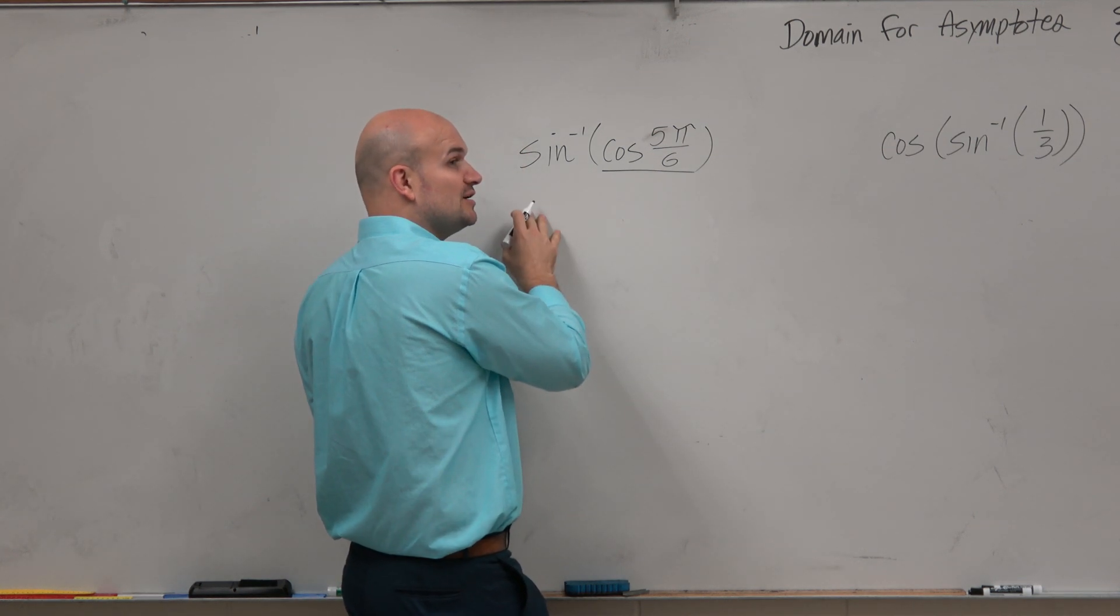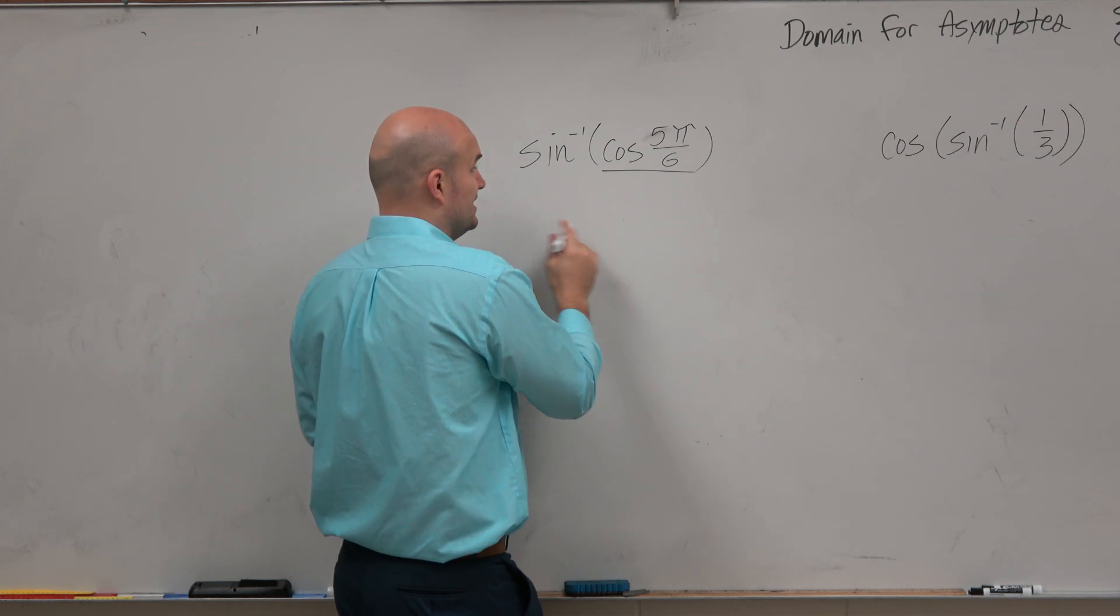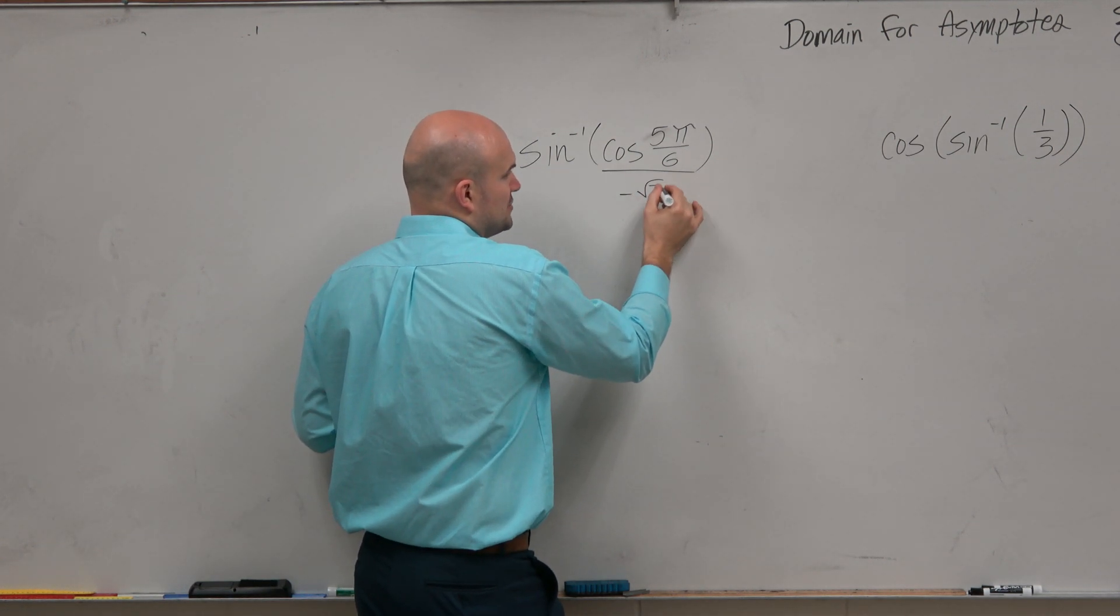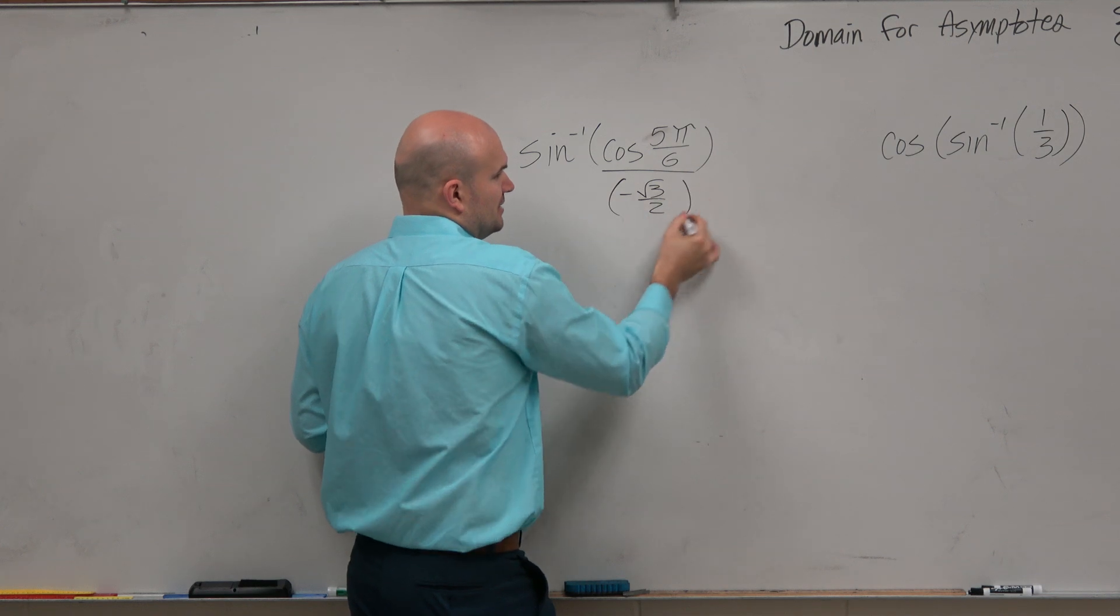So if it's in the second quadrant, then that means it has to be negative. So basically, this is negative square root of 3 over 2. That's what that equals.